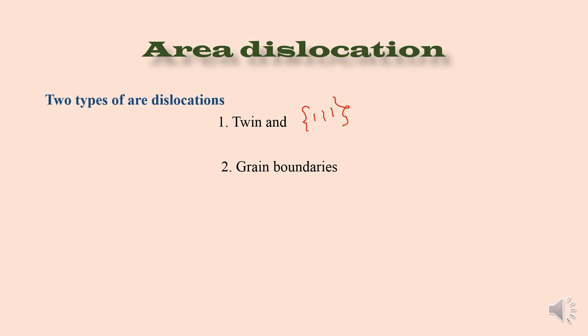That means, a grain boundary represents a transition between crystals having no particular orientation relationship to one another. Grain boundaries are more disordered than twins and separate grains of single crystal in polycrystalline silicon.